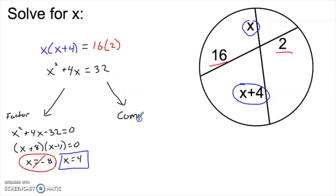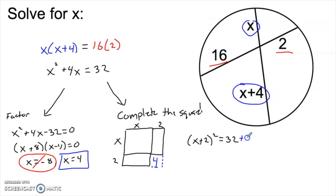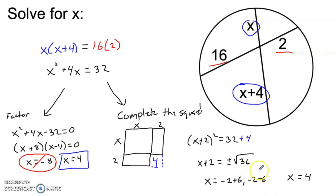The other option is to complete the square. You have an x by x square and a 4x term, which I'll split into 2x and 2x. I complete the square by filling in the corner, which adds an extra four units of area. This tells me that an (x+2) by (x+2) square equals the original area of 32 plus the 4 that I added. Taking the square root of both sides, x + 2 equals ±6, which means x is negative 2 plus 6 or negative 2 minus 6. We reject the negative solution, giving us x = 4.